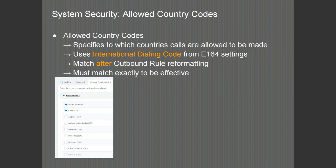The allowed country codes will show you which countries the PBX is allowed to make international calls to. This is in addition to the outbound rules of the PBX. If you allow calls to a country, for example the United Kingdom, and you don't have it as an allowed country code, it will not allow the call to go through. The allowed country codes will override any settings in the outbound rules, using the international dialing code from the E.164 settings of the PBX. The match is done after the outbound rule reformatting — after you have stripped and prepended digits — and it must match exactly to be effective.